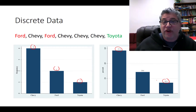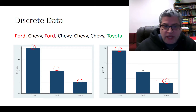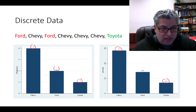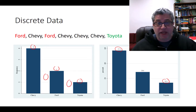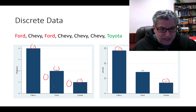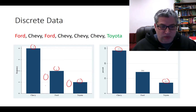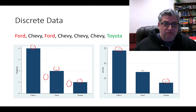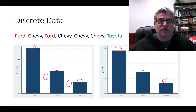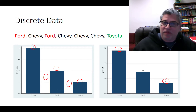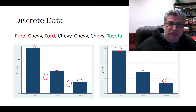One thing that's very common in bar charts is that there's a gap between our categories. The reason for that is that it's not like this is a spectrum of car-ness — it's not like Ford is halfway between Chevy and Toyota. These are different things, and so they get completely independent and separate bars. That'll be a little bit different with histograms.